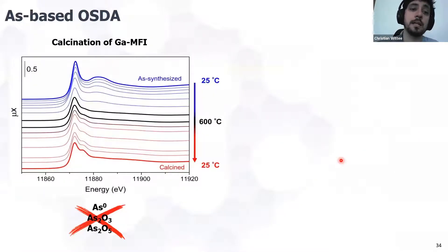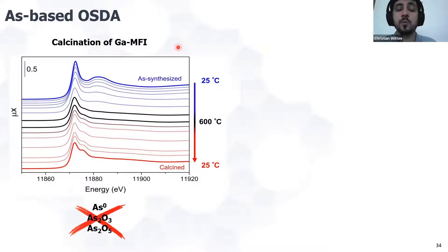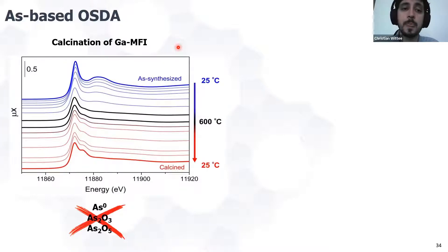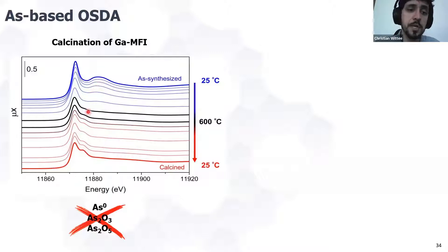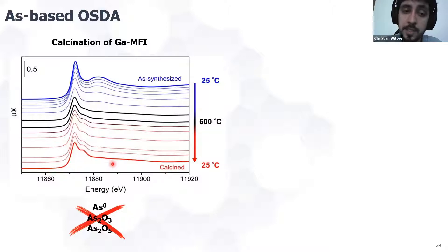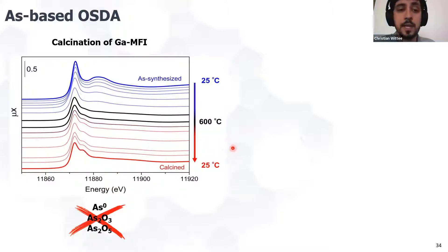In the EXAFS first shell, we have the arsenic-to-carbon contribution. By fitting this contribution, we obtained a coordination number of approximately 4, in good agreement with the theoretical value, and a distance of 1.93 Å, in fair agreement with the single-crystal XRD structure for this cation. We then studied the calcination of the gallium MFI zeolite. When we have gallium, we have a charge to be compensated since gallium is 3+ and silicon is 4+. Heating to 600°C, we observe in the XANES that we lose a spectral feature, and after calcination the spectrum is completely different from the as-synthesized sample.